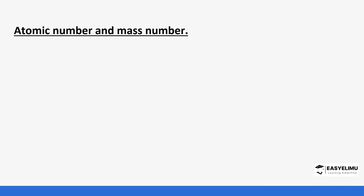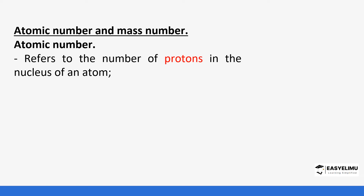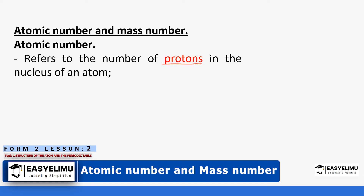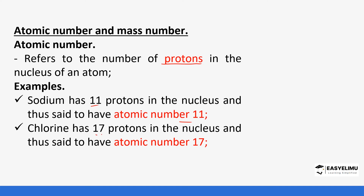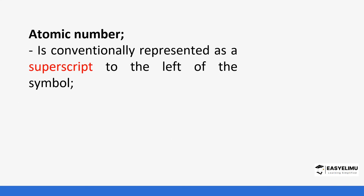We'll start by defining what atomic number is. The atomic number is the number of protons in the nucleus of an atom — not the number of electrons, because the number of electrons can change. For example, sodium has 11 protons so its atomic number is 11, and chlorine has 17 protons so its atomic number is 17. Atomic number is usually represented in a certain way when showing atoms or elements.